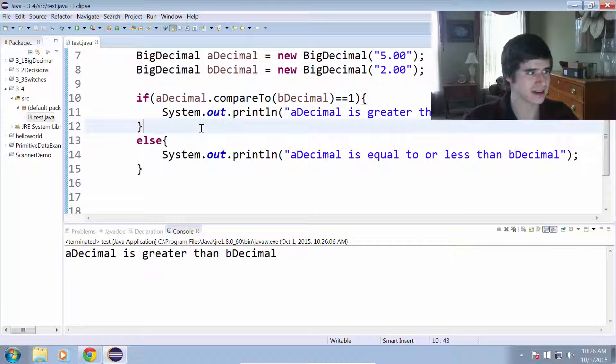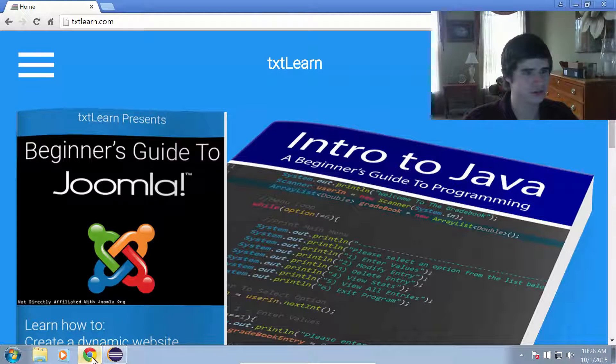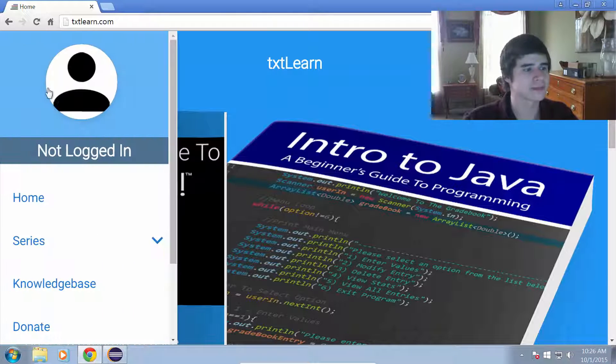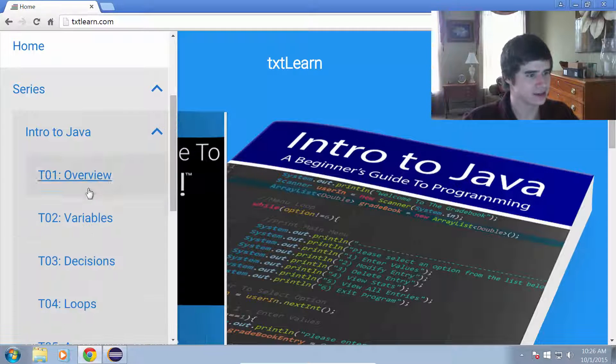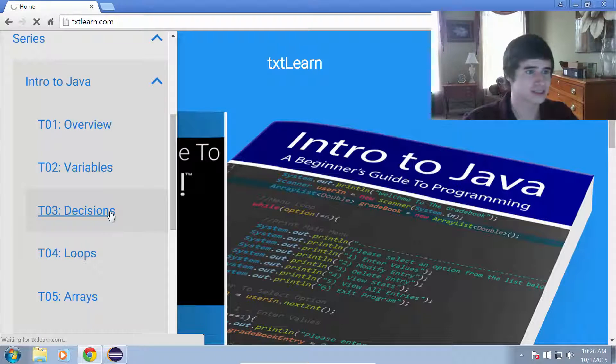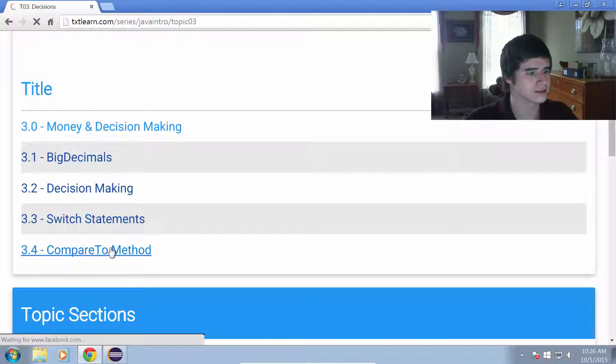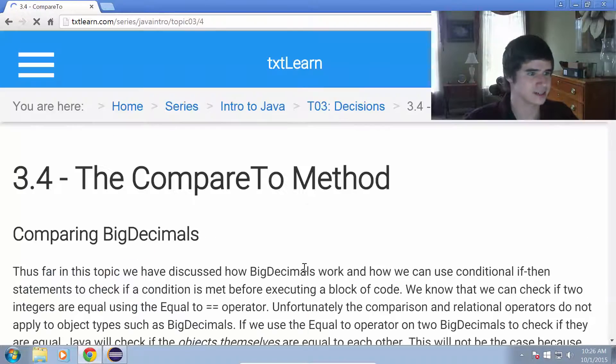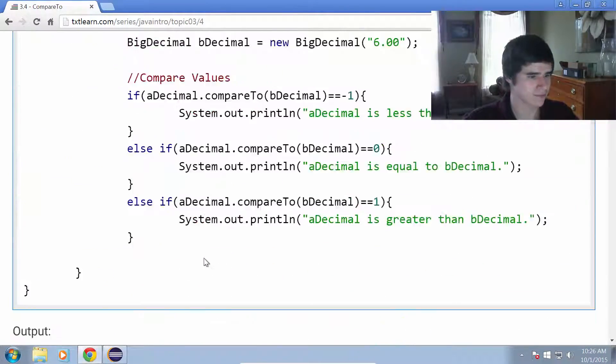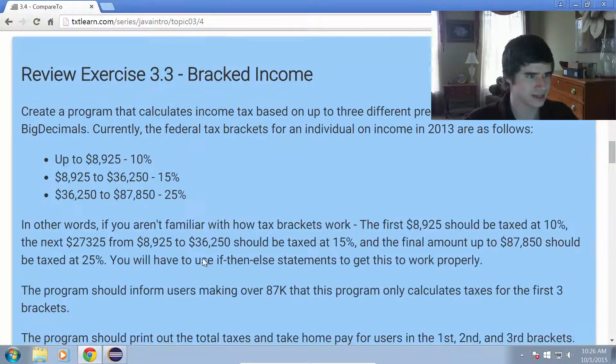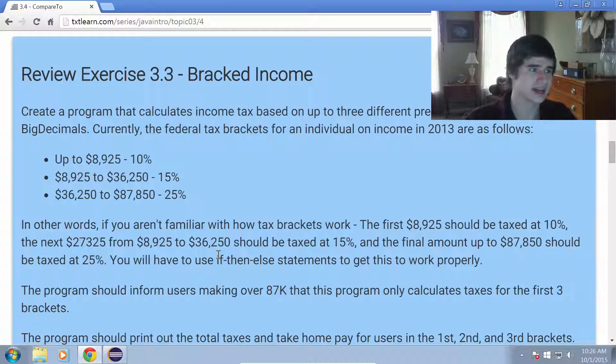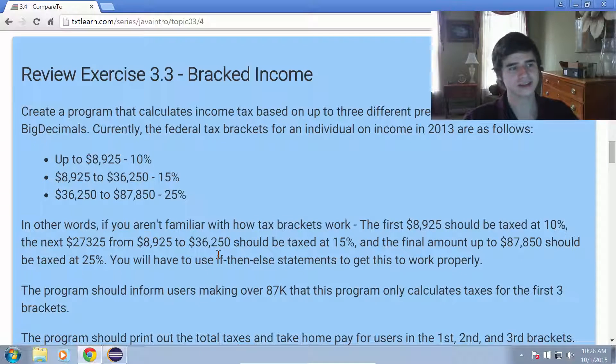I hope you understood that alright. If you have any questions, don't hesitate to post in the forums at textlearn.com. Now we do have a review exercise for this topic to kind of wrap things up here. So this is the last section of topic three, and the review assignment here is to create a bracketed income tax calculator. So let's read the instructions and see what the goal here is.